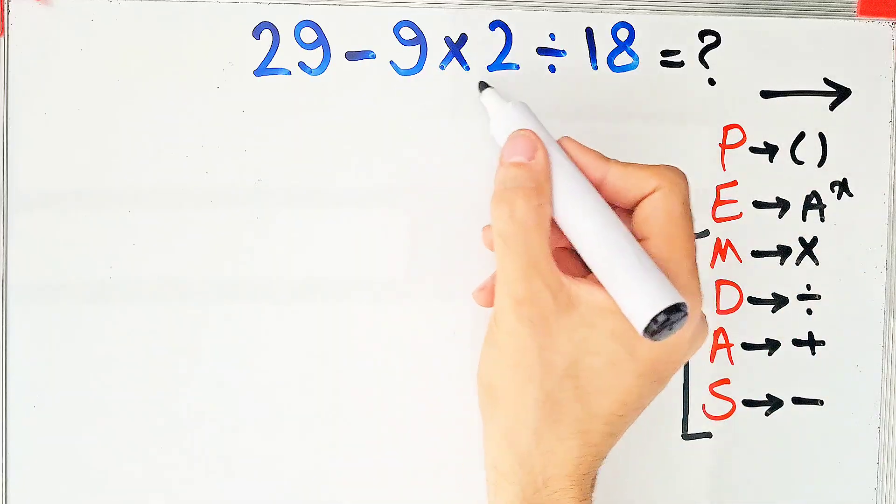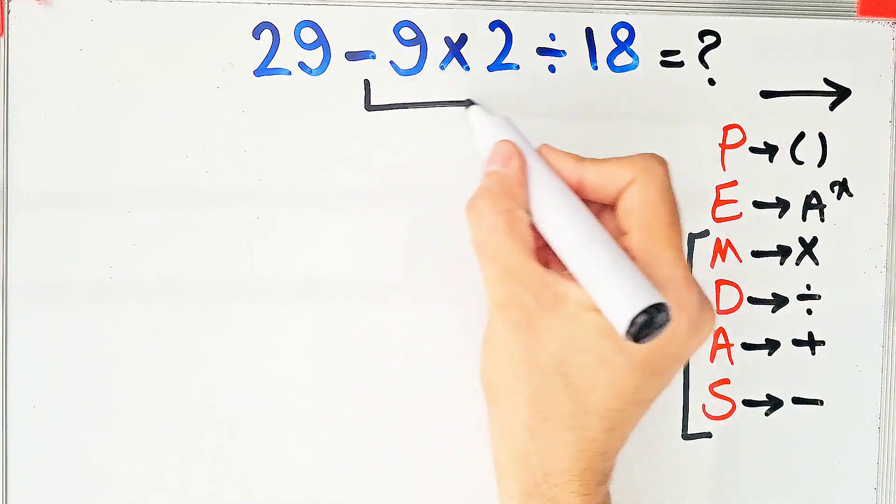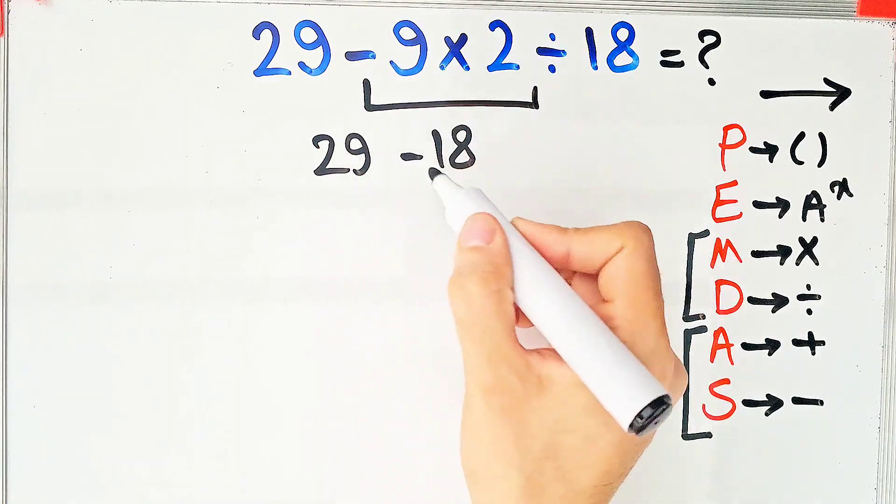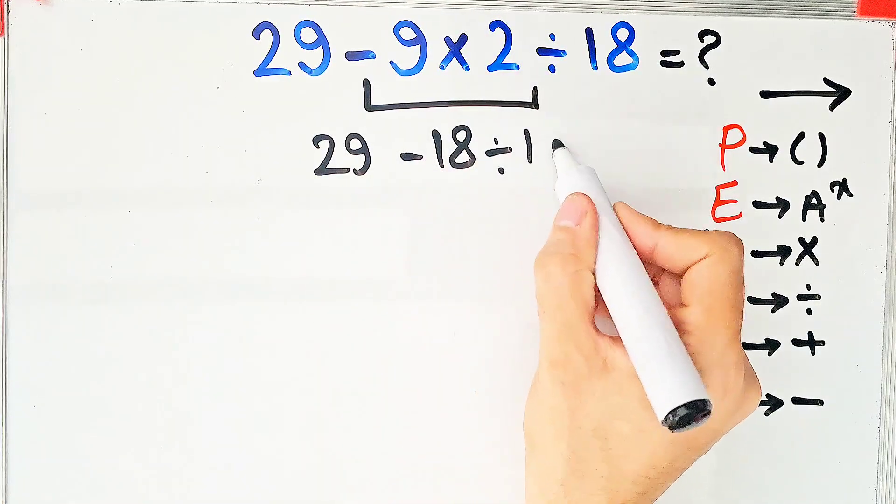According to the PEMDAS rule first we simplify this multiplication. Negative 9 times 2 equals negative 18. Now we have 29 minus 18 divided by 18.